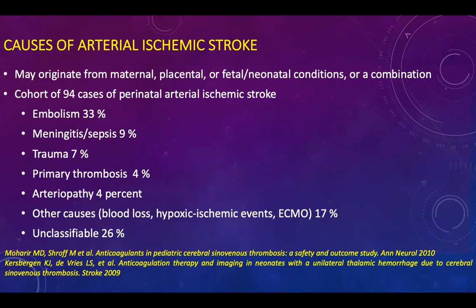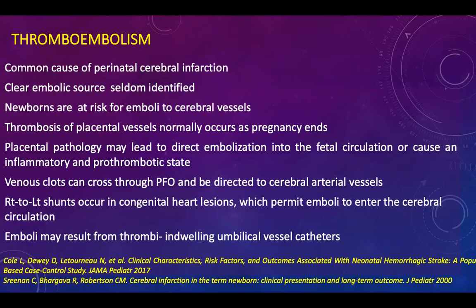Arterial ischemic stroke can originate from maternal, fetal, or neonatal conditions, or a combination. In a cohort of 94 cases of perinatal arterial ischemic stroke, embolism was found in 33%, meningitis and sepsis in 9%, and other causes including hypoxic ischemic events, ECMO, blood loss, and dehydration in 17%. Thromboembolism is a common cause of perinatal cerebral infarction; however, a clear embolic source is not readily identifiable, and newborns are at risk for emboli to cerebral vessels.